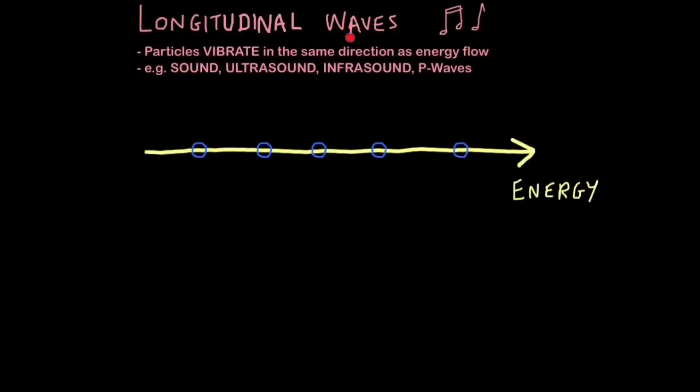Whereas with longitudinal waves, this is a second type of wave, particles vibrate in the same direction as energy flow. Examples of longitudinal waves are sound waves, any sound wave, ultrasound - that's above the range we can detect, and infrasound - that's below the range we can detect, and P-waves, which are basically waves which originate from earthquakes.